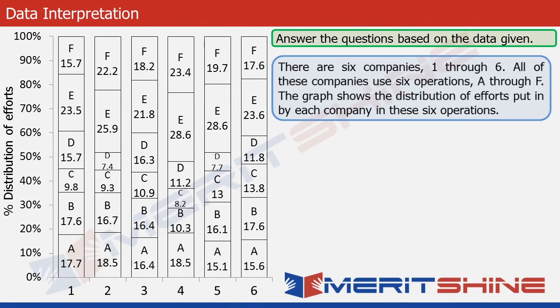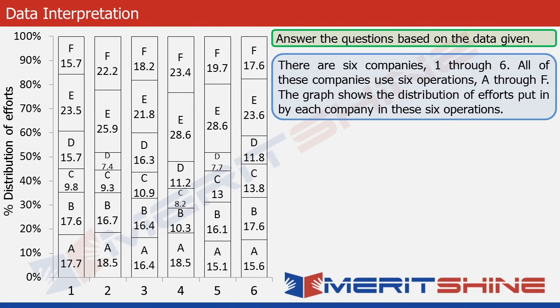The bar graph given below shows data about operations conducted by 6 companies numbered 1 to 6. Each bar corresponds to one company. Take for example company 6. This is a stacked bar graph, meaning that a bar is subdivided into smaller parts. If you look at the data for company 6, there are 6 parts of the bar and these 6 parts add up to 100. The numbers written against each operation add up to 100.